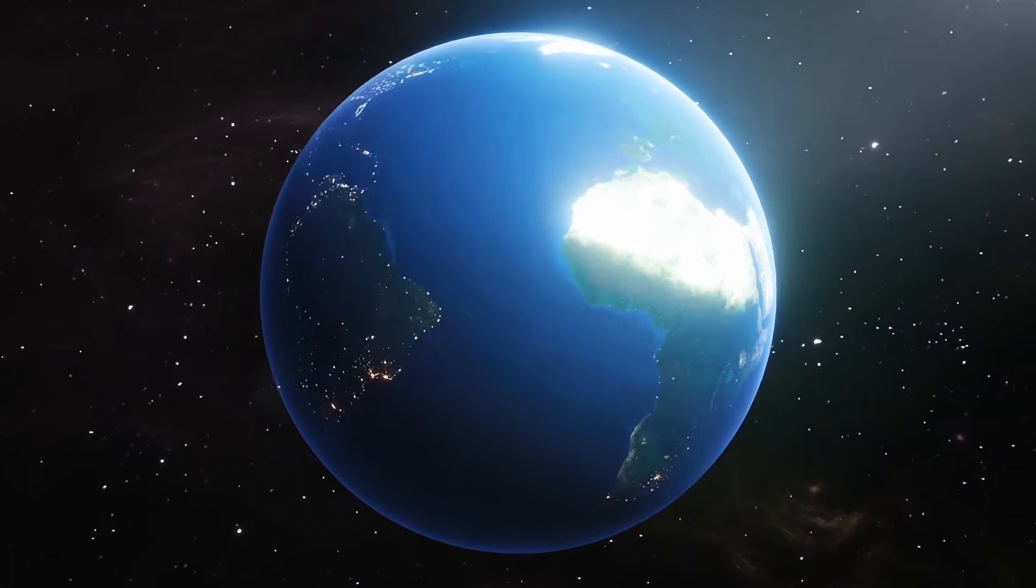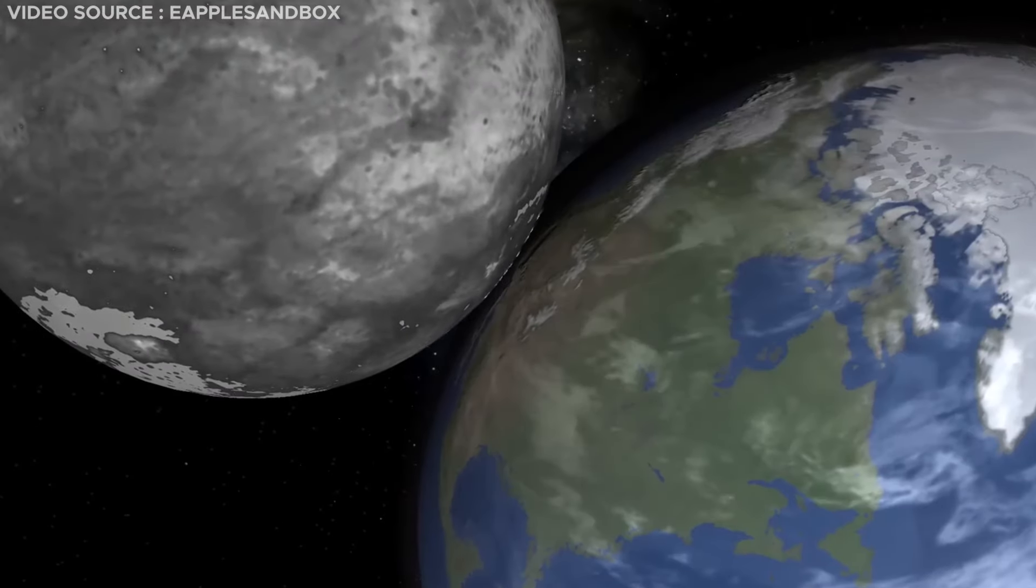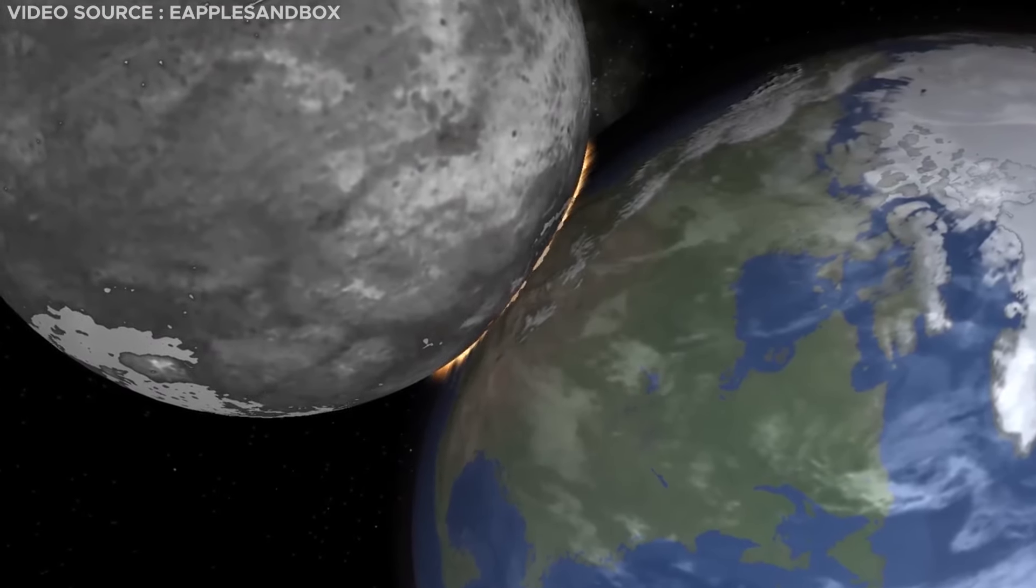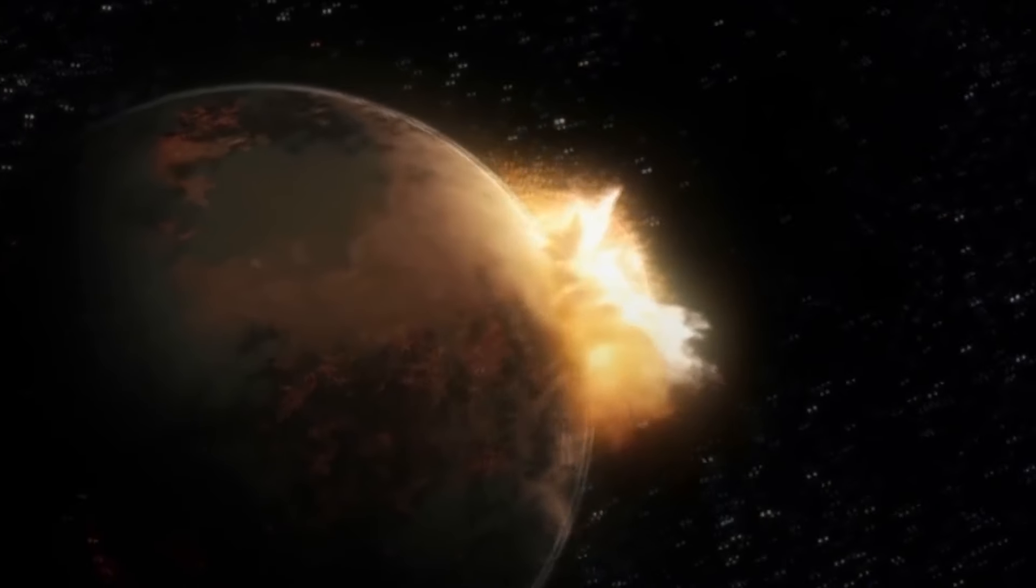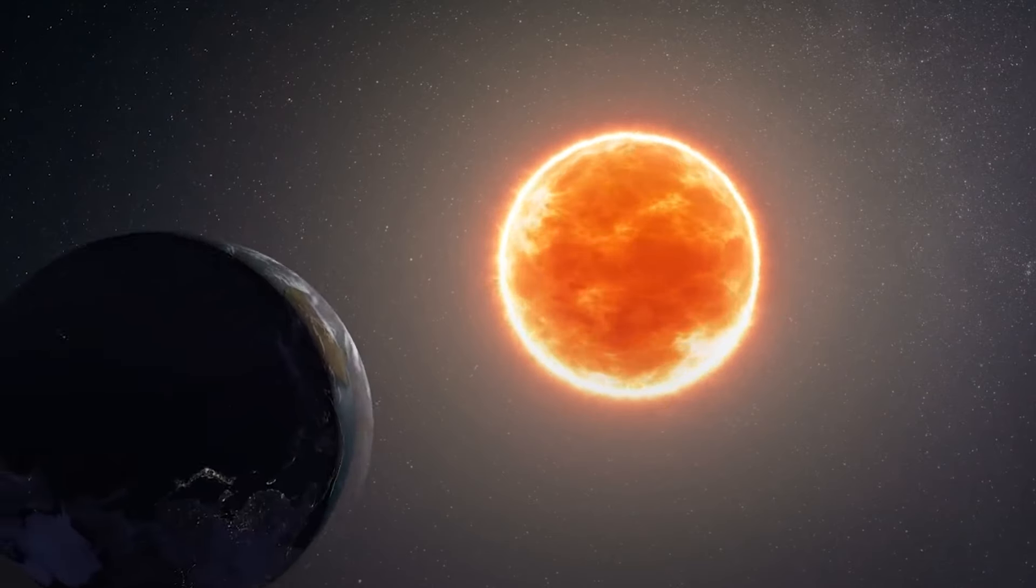The cessation of Earth's rotation would likely require a cataclysmic event, such as a collision with another planet. Even in such an extreme scenario, it is more plausible that the impact would alter Earth's rotation rather than completely halt it.